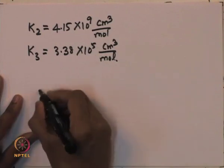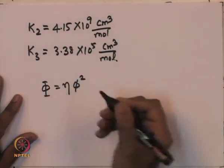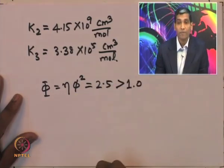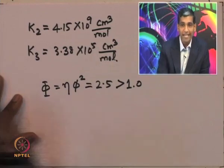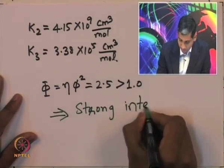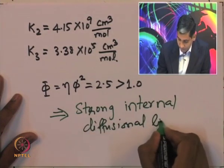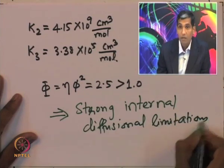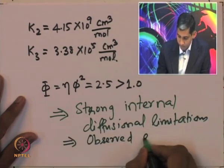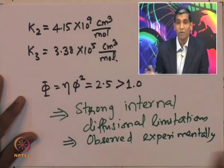Plugging in these values, the generalized parameter Φ = η·φ² evaluates to 2.5, which is certainly greater than 1. The generalized criterion therefore correctly predicts strong internal diffusional limitations — consistent with the experimental observation from cutting open the catalyst.